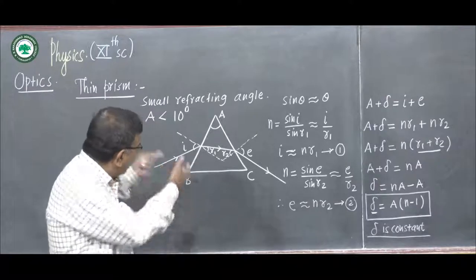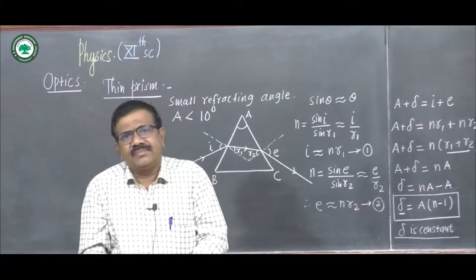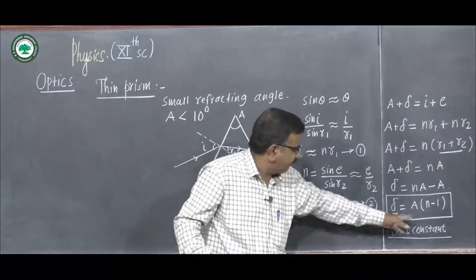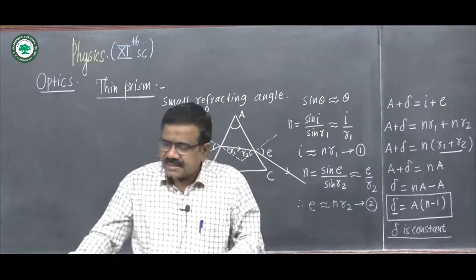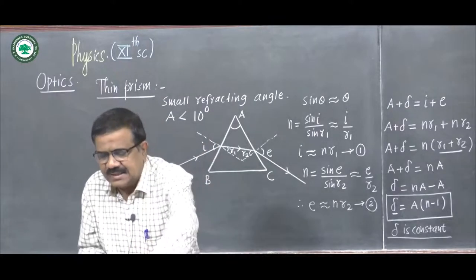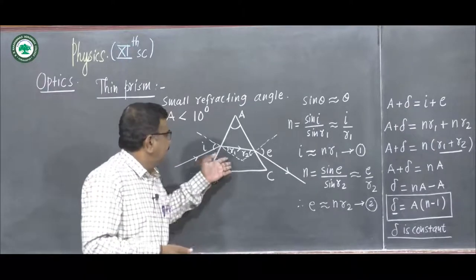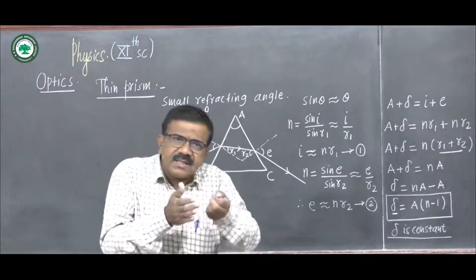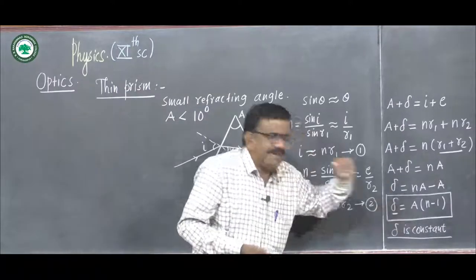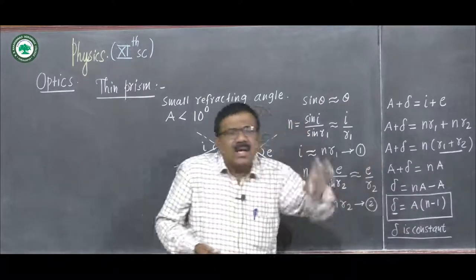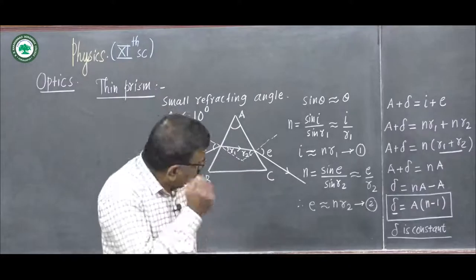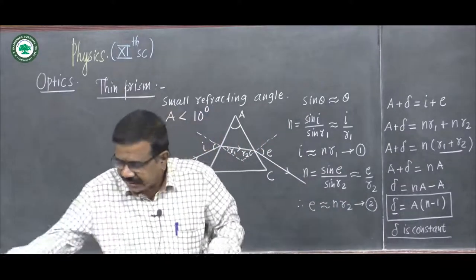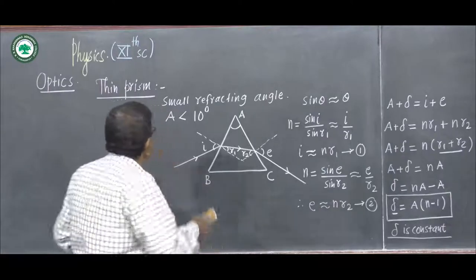Questions based on this article may ask: what is a thin prism, or derive the formula for the angle of deviation of a thin prism — that is, derive up to δ = A(n − 1). Another question may be to show that for a thin prism with small angle of incidence, the angle of deviation is constant and independent of i, since A and n are constant.